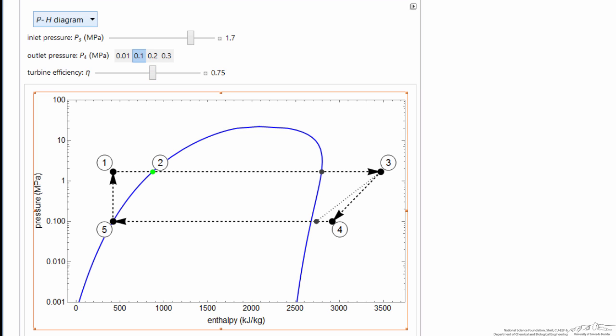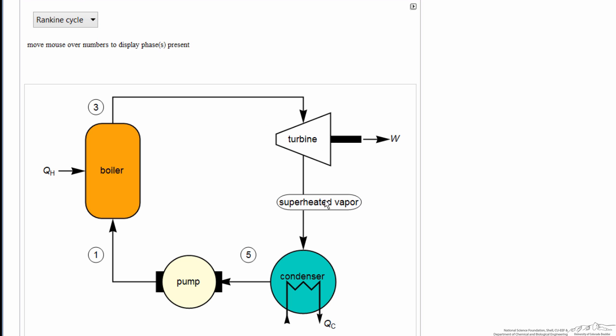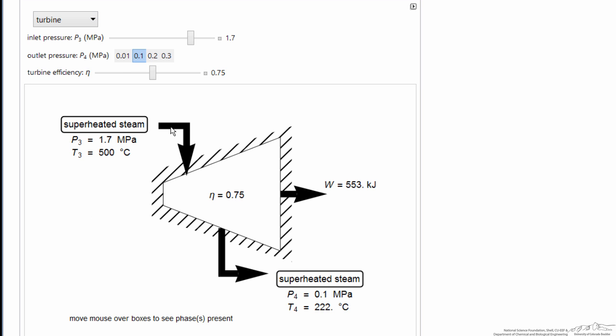The other options here are to look at the cycle, where for the conditions we've chosen, we have superheated vapor leaving the turbine, and then saturated liquid that's fed to the turbine, and then we also have, as part of the simulation, the conditions.